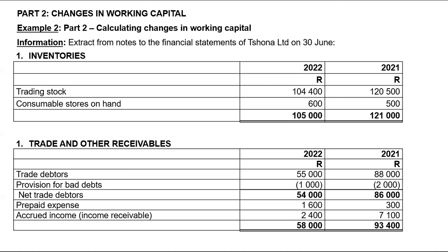Under working capital, we've got three headings: inventory, receivables, and trading other payables. So we'll simply be looking at the cash effect that results from changes in inventories, changes in trading other receivables, and changes in trading other payables.